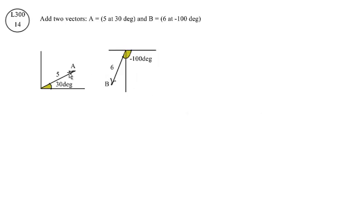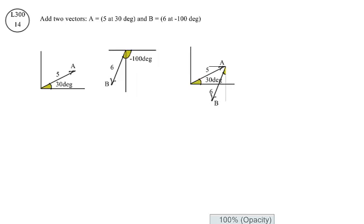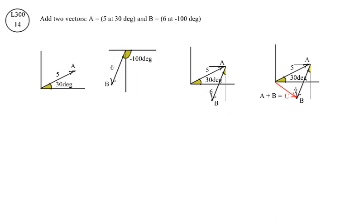Here's A, 5 at 30 degrees, and 6 at negative 100 degrees. We can visualize what the sum of these two vectors is by putting the tail of the B vector at the head of the A vector. Then the sum of those two vectors is C, a vector from the tail of A to the head of B.